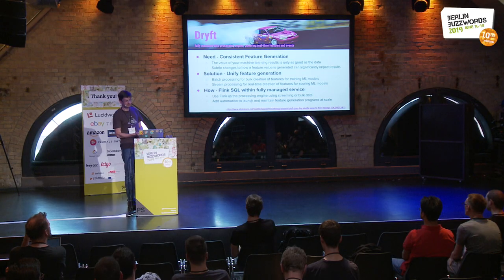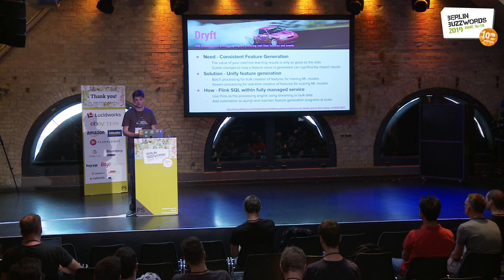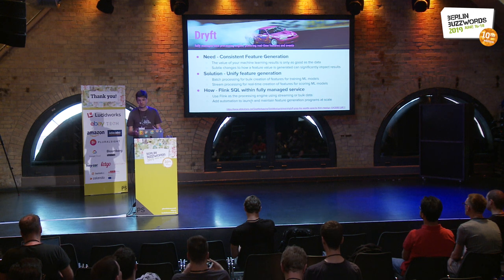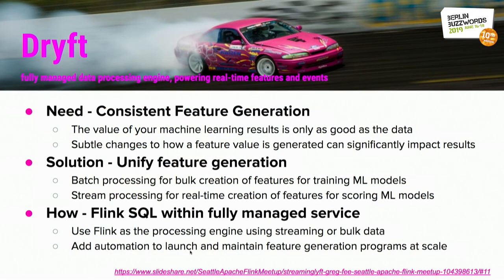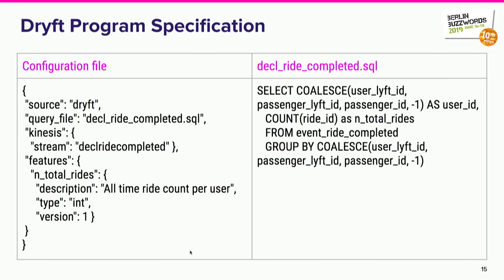Let's look at the analytics system, which we call internally Drift. The goal of the system is to enable feature generation broadly in a unified way for machine learning — one system that can do that for bulk processing to generate features for training, but also for real-time processing for the current events for scoring or model inference. Users write SQL to define what those pipelines should do, and then give the job declaration to a fully managed service that ensures it runs and gets deployed in the right way. There is a configuration file describing the SQL query, the sources, and the features being created.